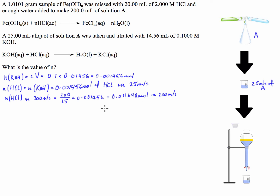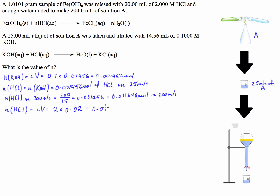Now we need to work out how much HCl was there before it reacted with the iron hydroxide. The number of moles of hydrochloric acid initially equals concentration times volume, which is 2 times 0.02, which equals 0.04 moles.